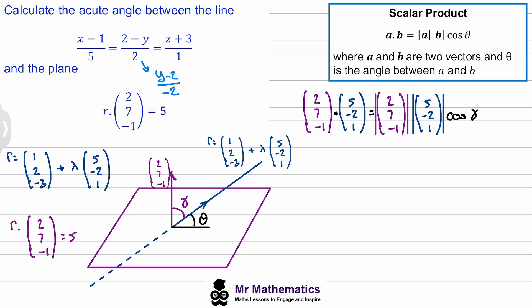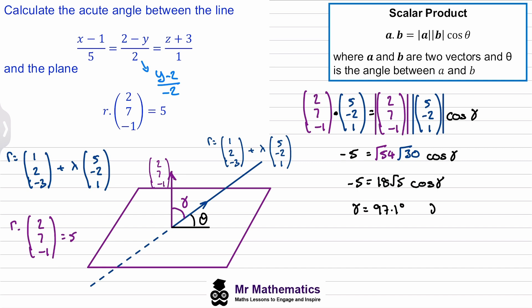So we've got A dotted with B equals the magnitude of vector A times the magnitude of vector B times cos of alpha. We dot these two together: we get 10 take away 14 take away 1. Then we find the magnitude of each. We get negative 5 equals root 54 times root 30 times cos of alpha. Working this out we get 18 root 5. Then we take the arc cos, so alpha will be 97.1 degrees. But we know alpha has to be acute, so alpha will actually be 180 minus 97.1, which gives us 82.9 degrees. Then to work out theta, we do 90 minus 82.9, which gives us 7.1 degrees.